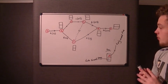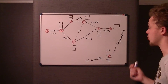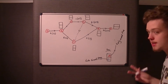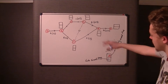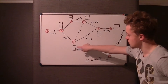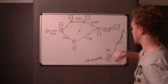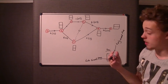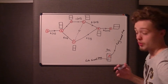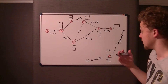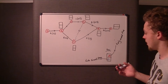It will become apparent how we calculate them in a minute. The top half of each box relates to the Early Event Time, and the bottom half will contain another number relating to the Late Event Time.